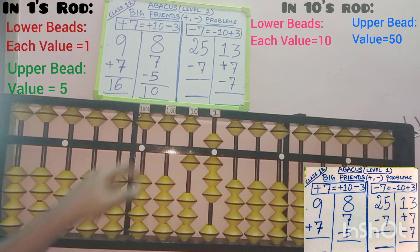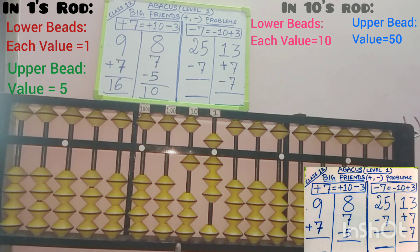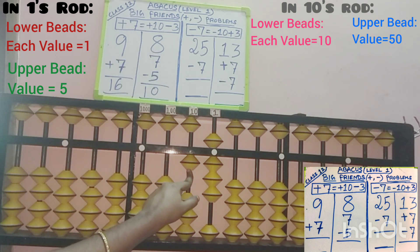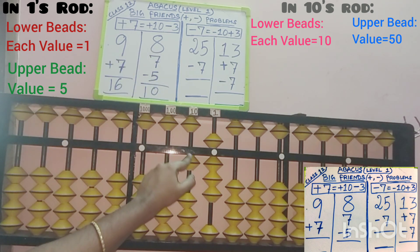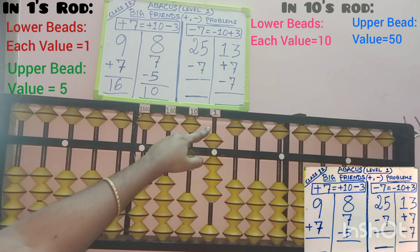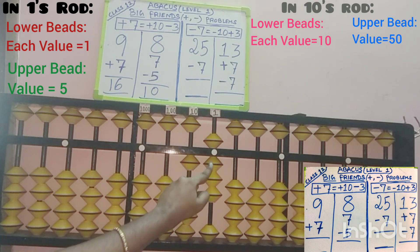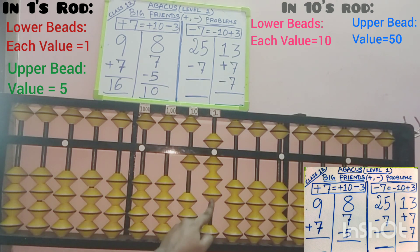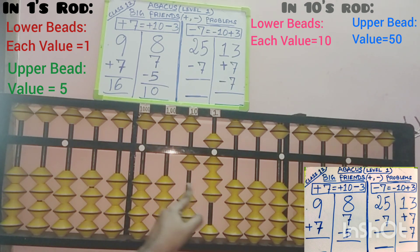Now check the answer. In the 10s place, only 1 bead touches here. And in the 1s place: 5, 6, 7, 8. So 18 is the answer for this third sum.